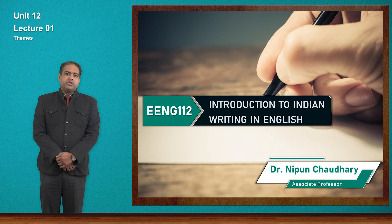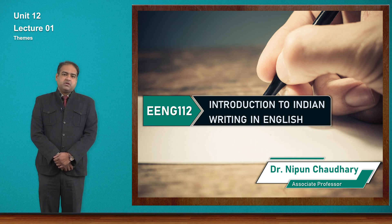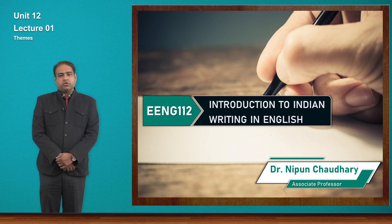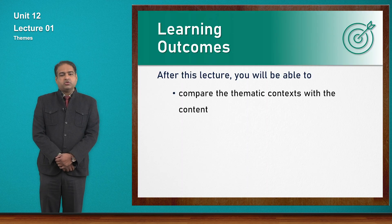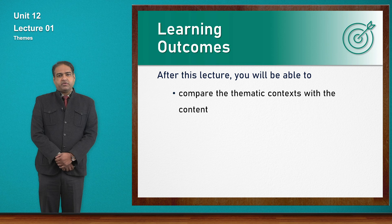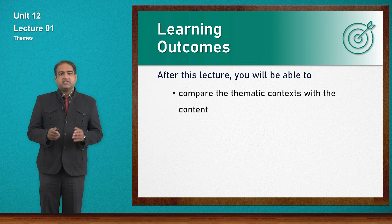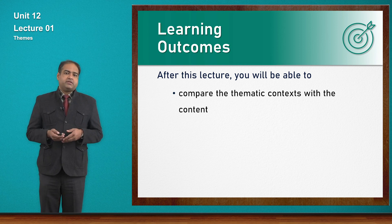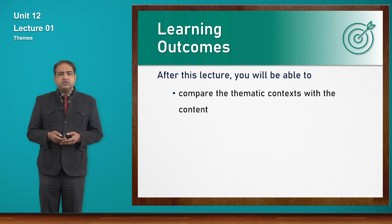In Unit 12, we will begin our discussion by talking about the themes which are visible in this work, The Inheritance of Loss. The lecture outcome will be that you would be able to compare the thematic contexts with the content — what are the themes, what is the context behind those themes, and how those themes are related to the content.